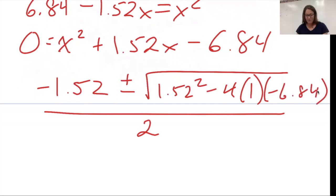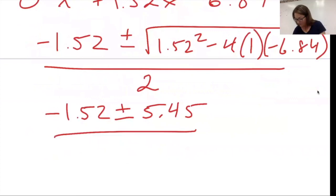So solving what's under the radical, 1.52 squared minus 4 times negative 6.84 times 1 equals, I get 29.7 and square rooting that, I now have negative 1.52 plus or minus 5.45. The whole thing over 2.